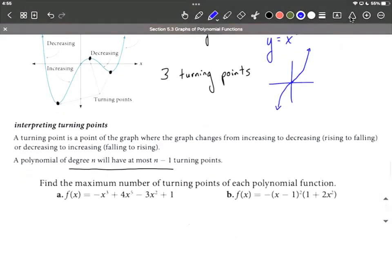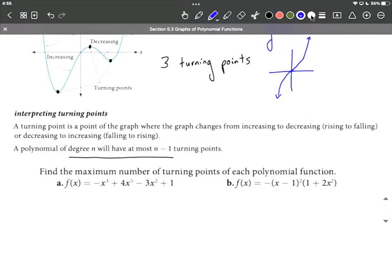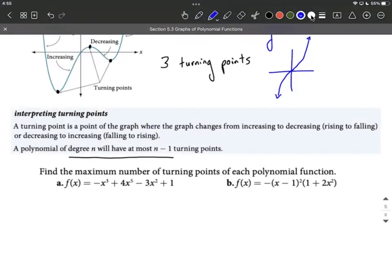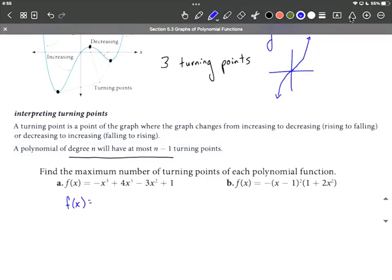Let's take a look at a couple examples here at the bottom. We want to find the maximum number of turning points of each polynomial. The first thing to do is think about what is the degree of each polynomial. Now this first one is not written in descending order. You may notice that 4x^5 is the highest power on x. So let's go ahead and rewrite this one in descending order. This has degree 5, so the maximum number of turning points is 5 - 1 = 4 turning points.